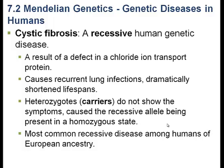Cystic fibrosis is very prevalent in the United States — about 1 in 2,500 live births is affected. So 1 in 2,500 babies have cystic fibrosis, making it more common than some genetic disorders and less than others. It's a devastating genetic disorder, and unlike some disorders that can be remedied by early treatment, cystic fibrosis has not been cured to this date.